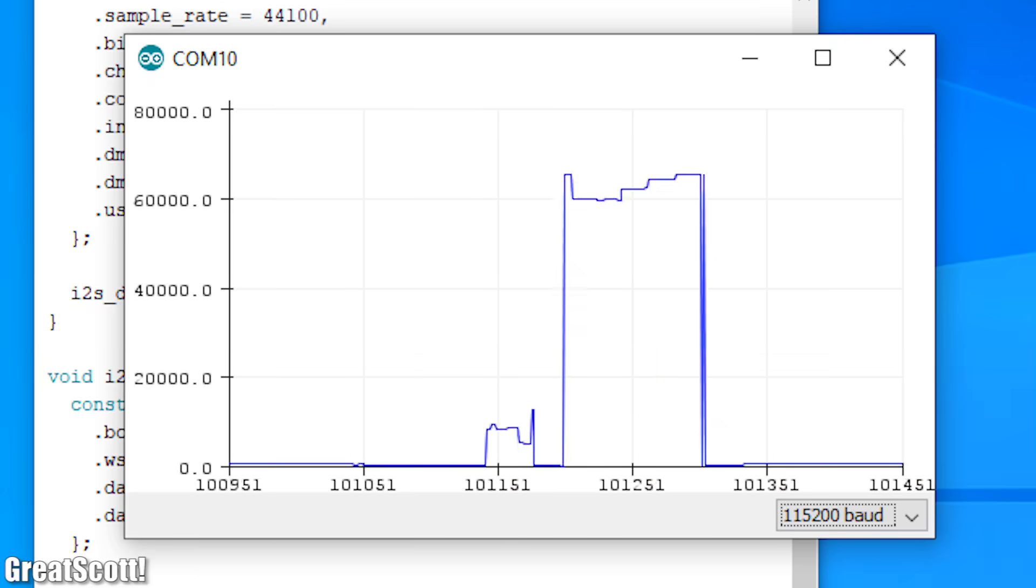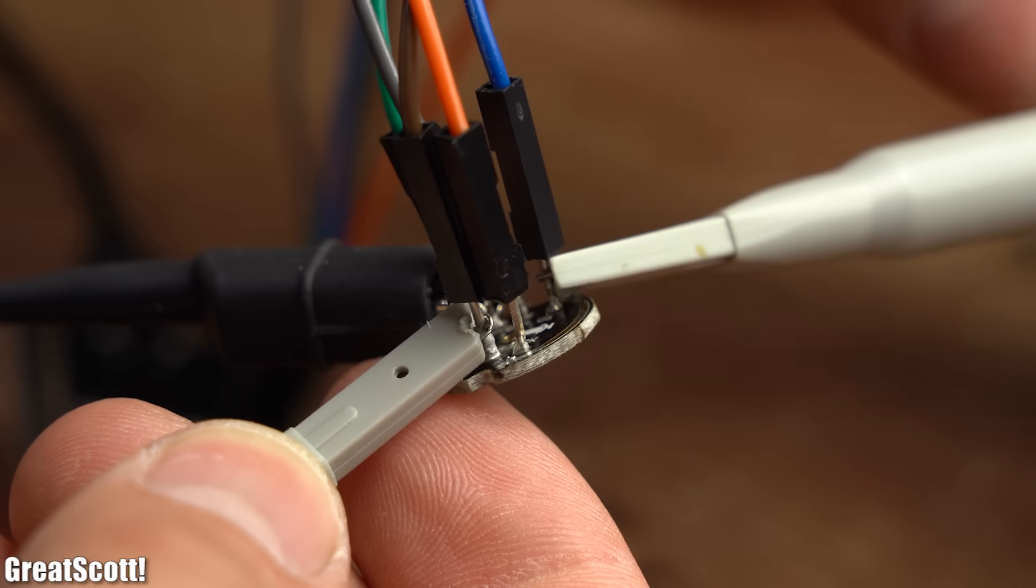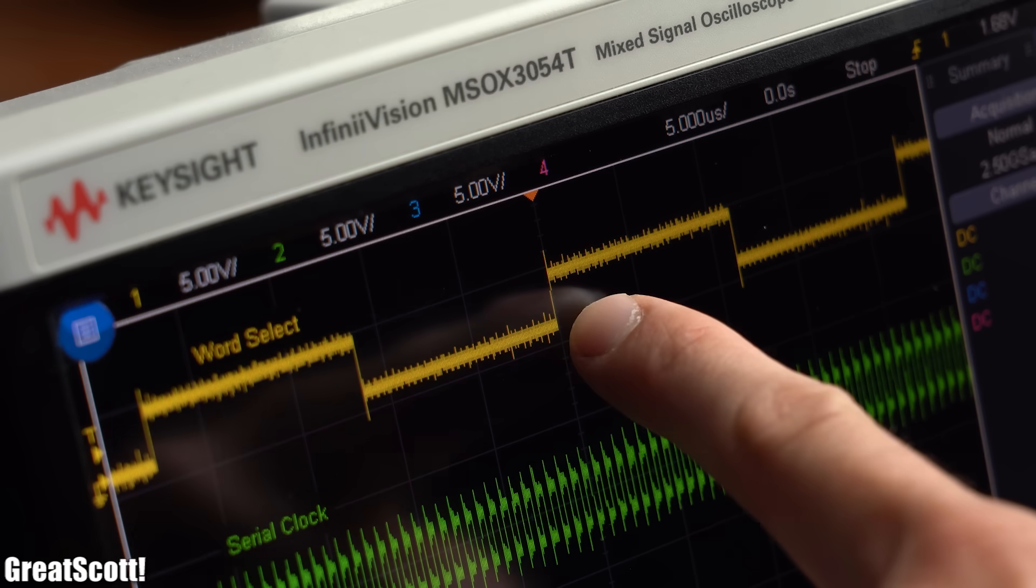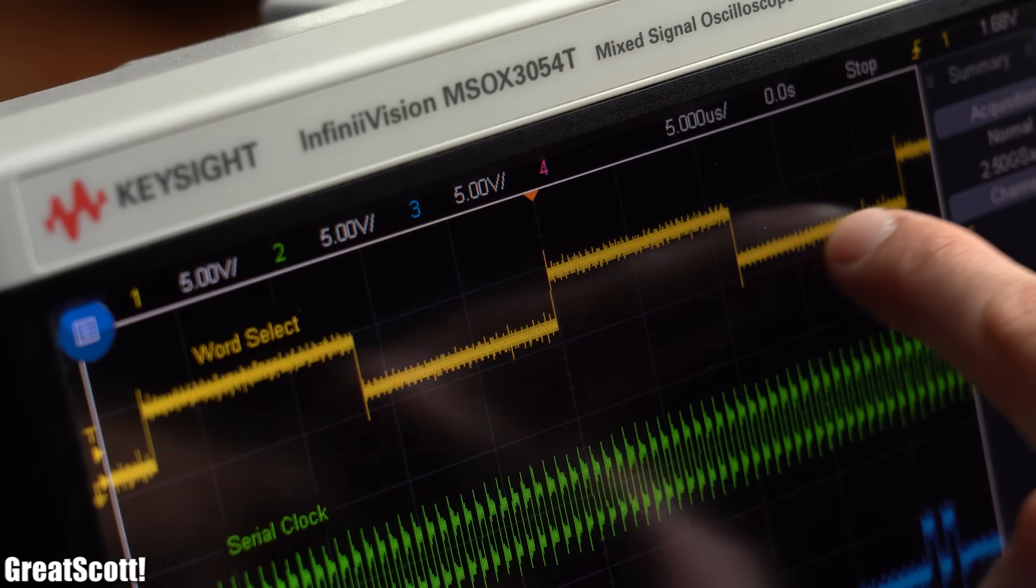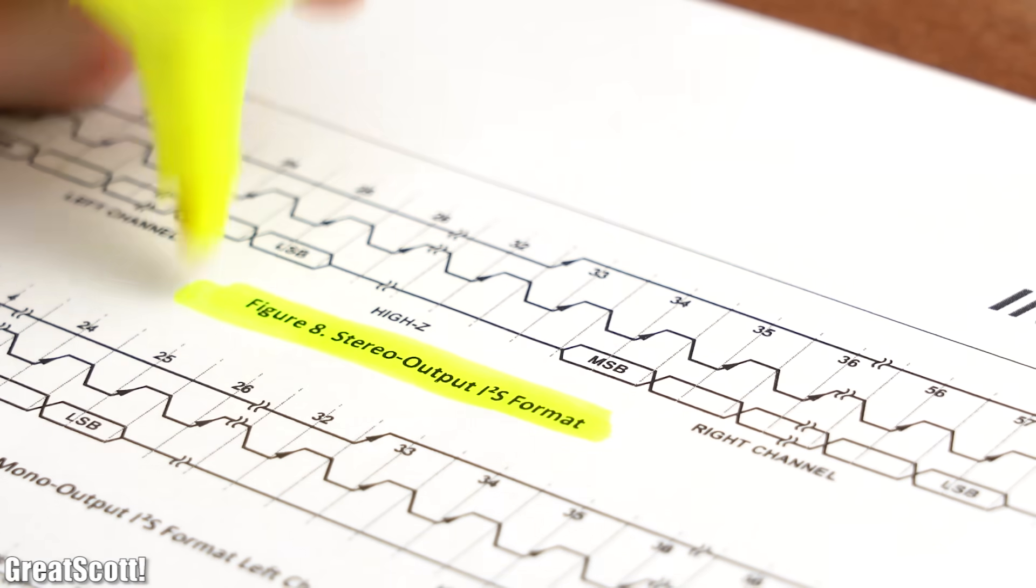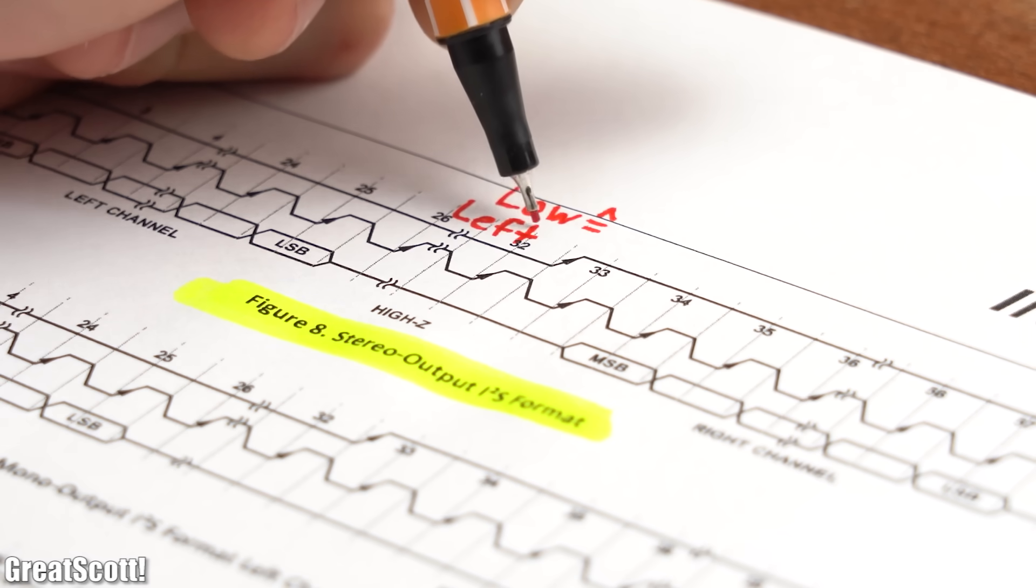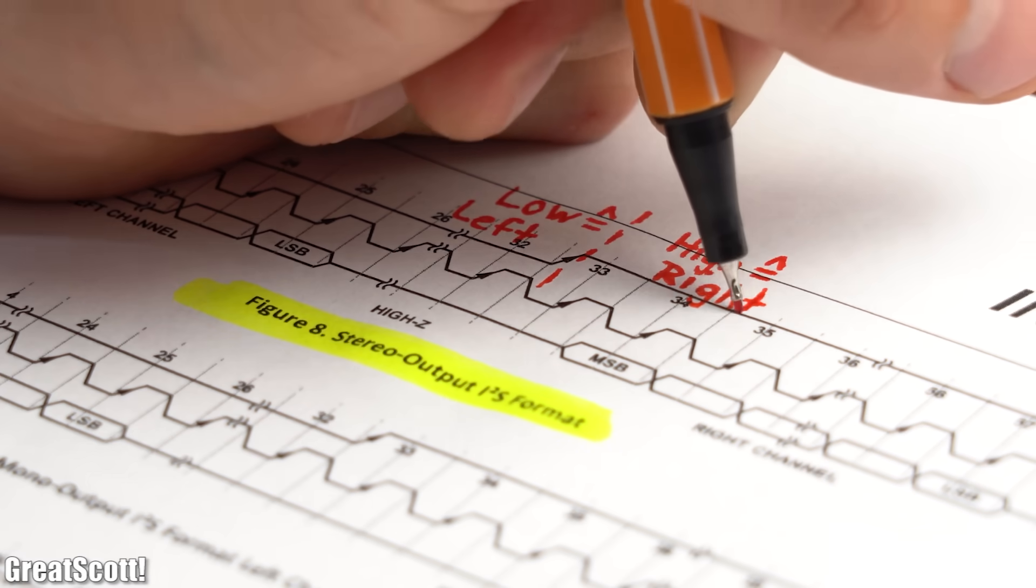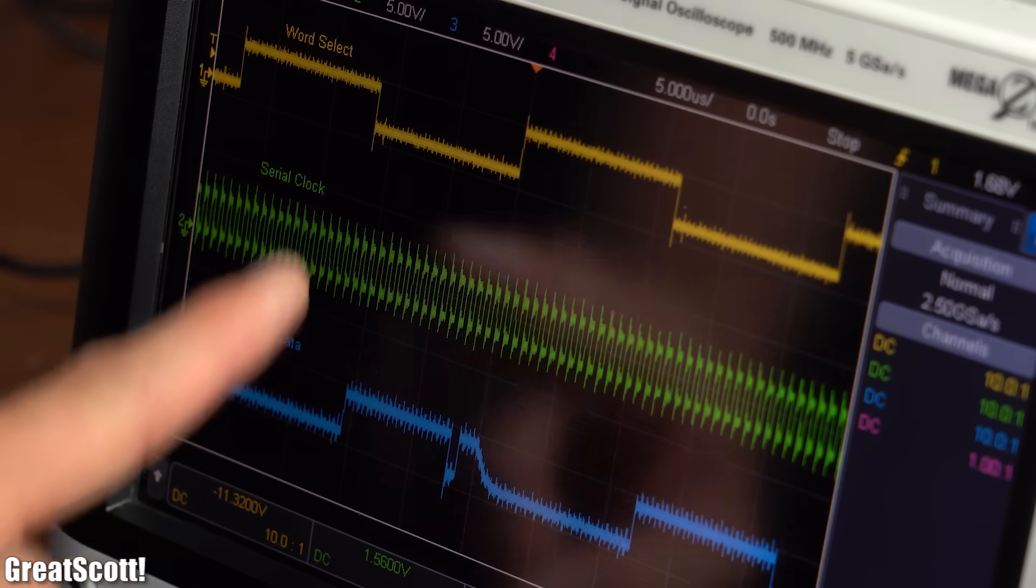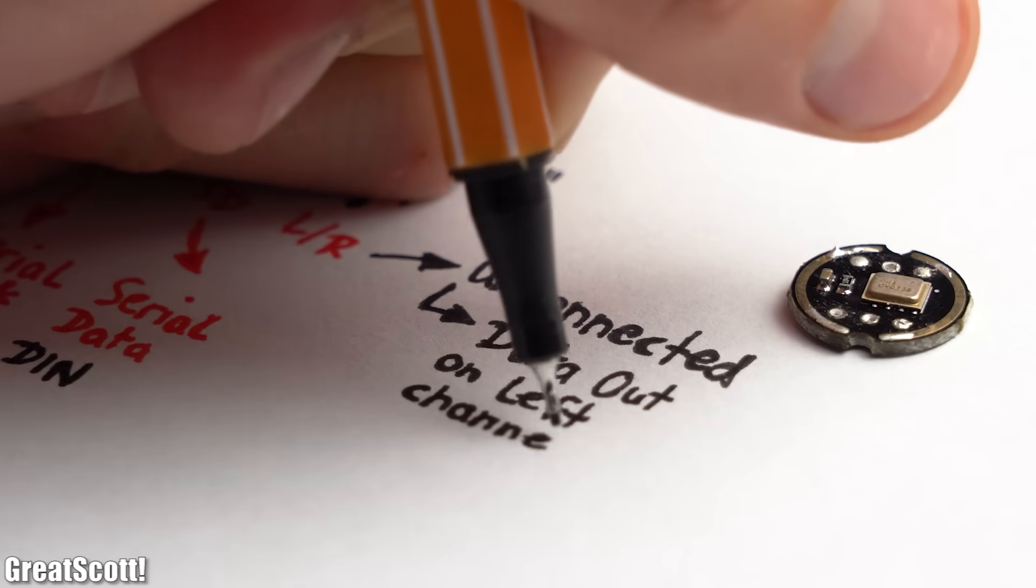That means everything works fine and it was time to have a look at the 3 I2S pins on the oscilloscope. First off we can see that the word select line constantly alters between high and low. The reason is that this bus transmits stereo audio and so the low state of the word select line indicates the left channel and the high state stands for the right channel. By the way in this example we only got data on the left channel because the unconnected LR pin defines that.